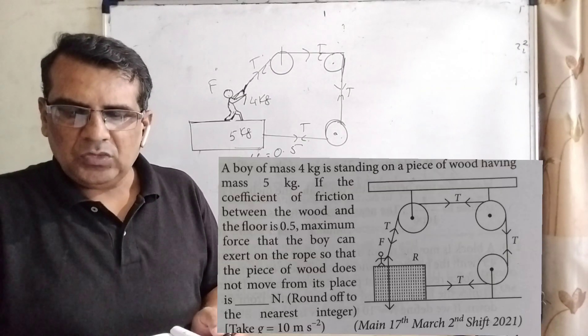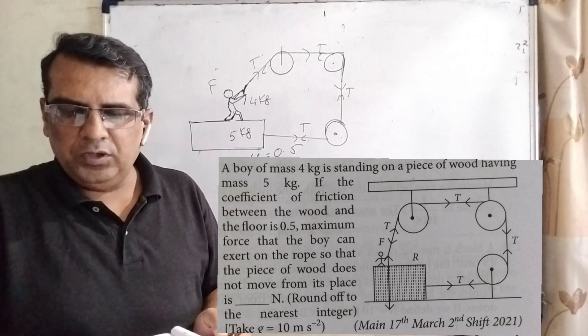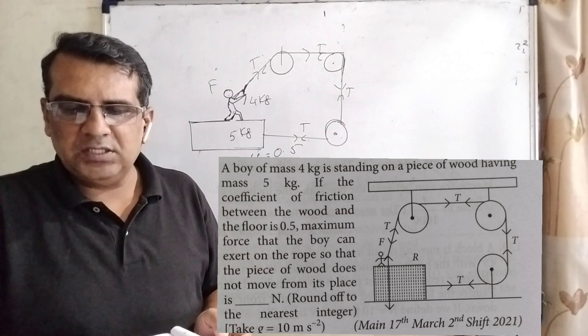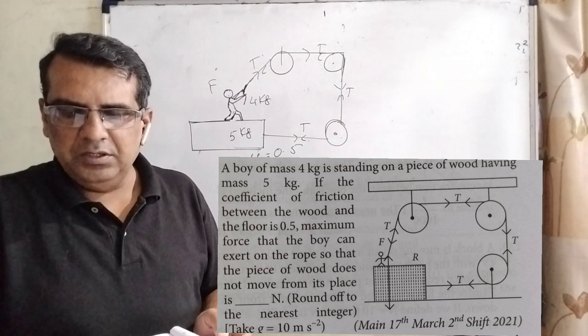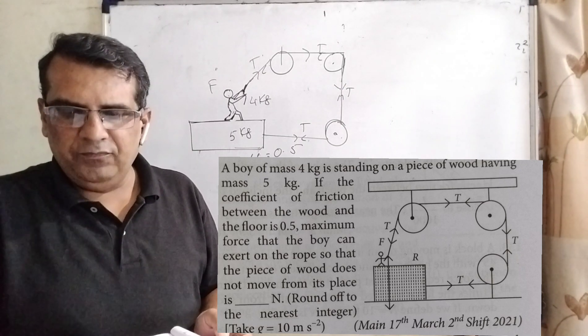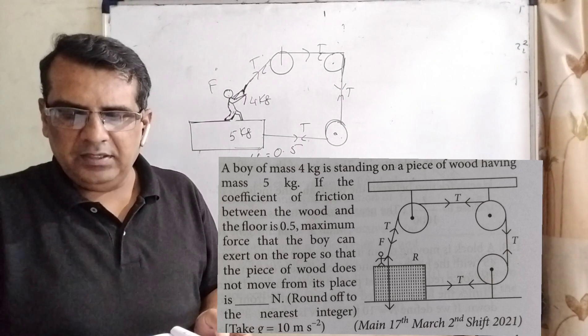Now here is the question. A boy of mass 4 kilogram is standing on a piece of wood having mass 5 kilogram. If the coefficient of friction between the wood and the floor is 0.5, maximum force that the boy can exert